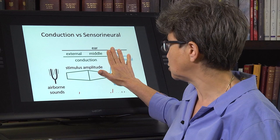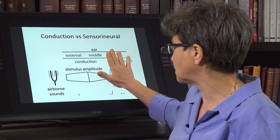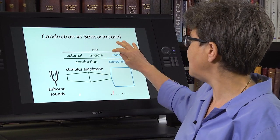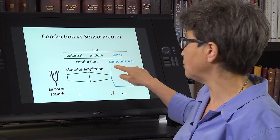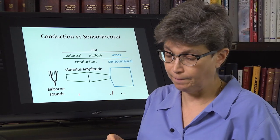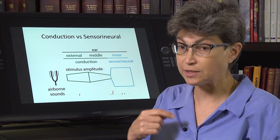the external ear and the middle ear are the conduction. That's where the conduction of sound is accomplished, external and middle ear. And then there's the inner ear where there's a sensory neural processing of that.